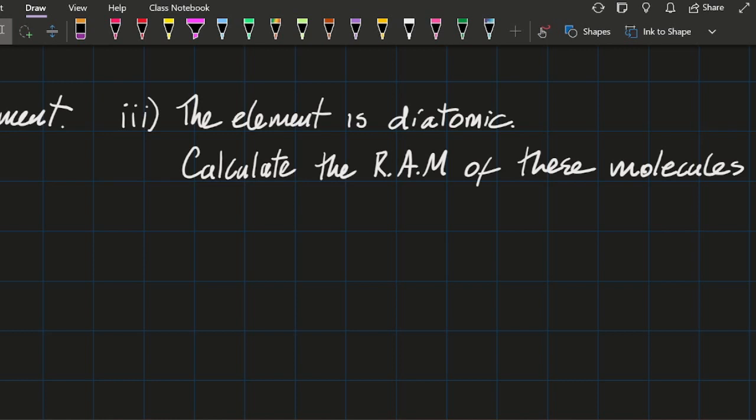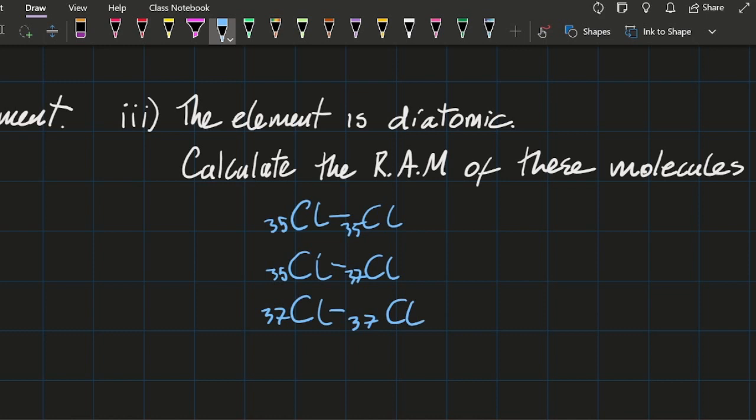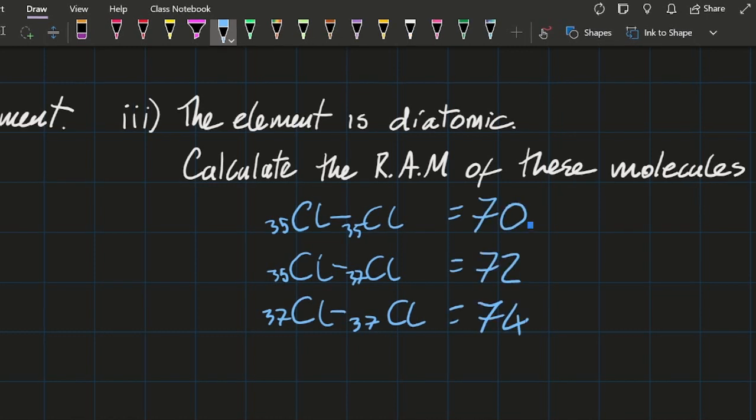And a question they've asked in the past is about the diatomics. What's the relative atomic mass of the diatomics? Well, I could have a couple of 35 isotopes, a 35 and a 37 isotope, or less likely, 2 37 isotopes, giving me those relative atomic masses.